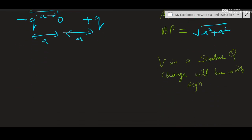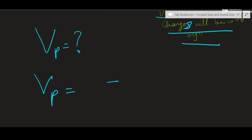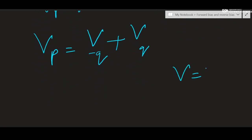Now we have to find out potential at point P. Potential is a scalar quantity and charges will be taken with sign. This rule we have to remember. Potential at P will be the sum of potential due to minus Q and potential due to plus Q. What is the general formula? General formula is KQ by distance.